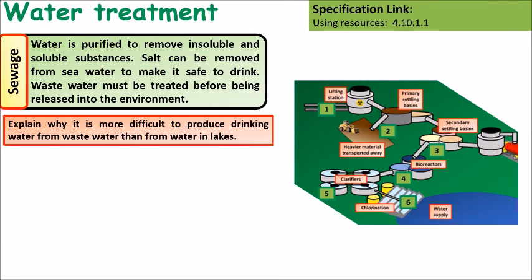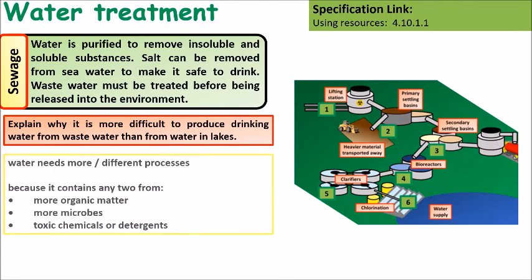Explain why it is more difficult to produce drinking water from wastewater than from lake water. The reasons are that wastewater contains more organic matter, more microbes, and more toxic chemicals or detergents that need to be removed.